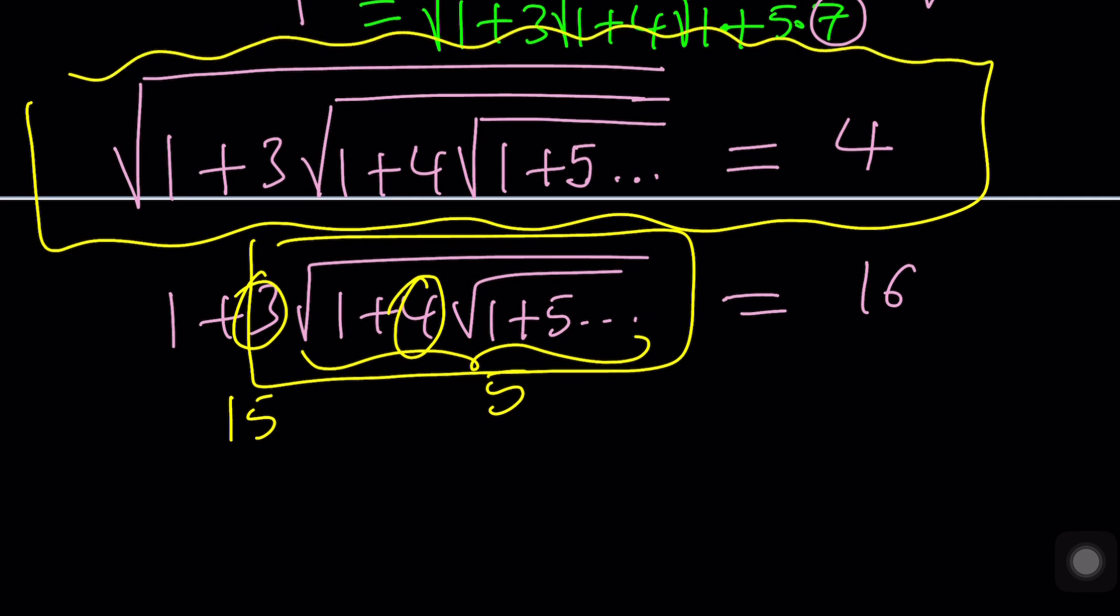This infinite radical converges and the answer is 4. It's finite and this brings us to the end of this video. Thank you for watching. I hope you enjoyed it. Please let me know, don't forget to comment, like, and subscribe. I'll see you next time in another video. Until then, be safe, take care, and bye bye.